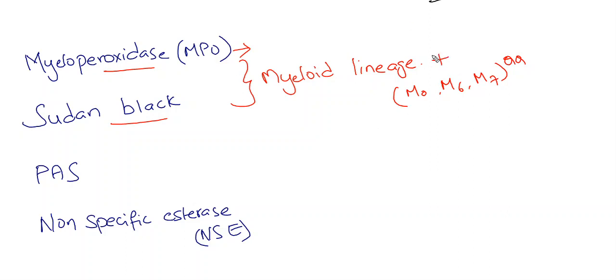What you have to remember is myeloperoxidase is strongly positive for myeloid lineage. What is myeloperoxidase? Please refer to my other video on Ontogeny of Human Cells. Monocytes are weakly positive or generally negative for these stains.